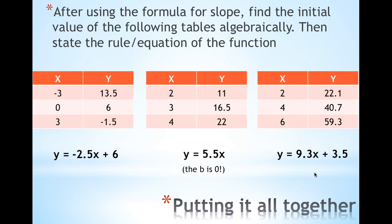Again, slopes and initial values can be decimals, negatives, whatever. When you plug in any of these points to the first part of this equation to solve for B, you get that B is equal to 3.5.